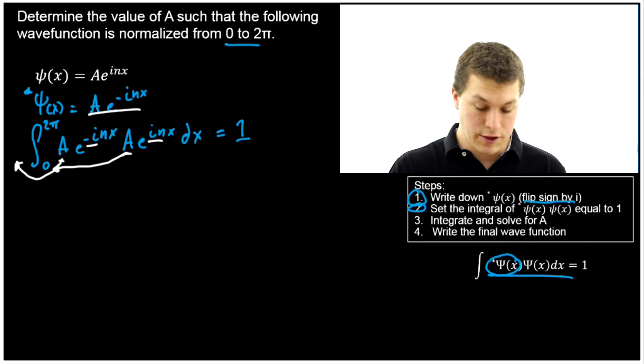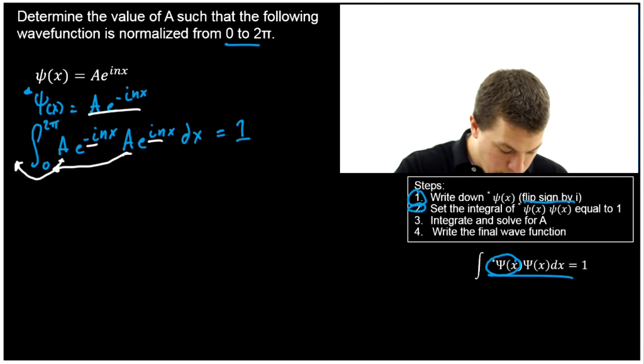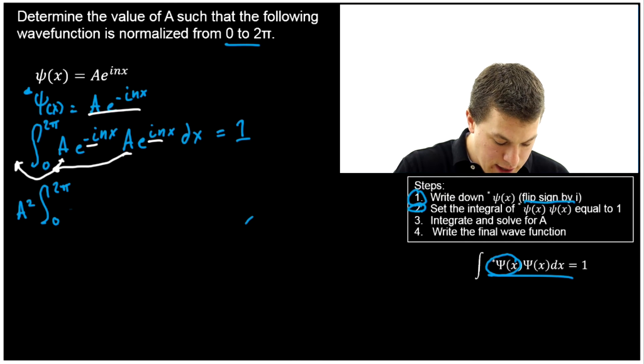Another thing to keep in mind is that when we're multiplying two exponentials, all we're going to do is add their exponents together. So when we simplify it we're going to get A² up front, still the integral from zero to 2π.